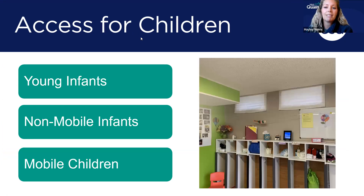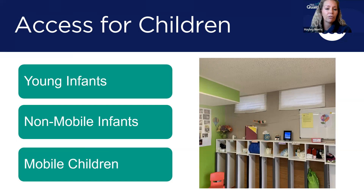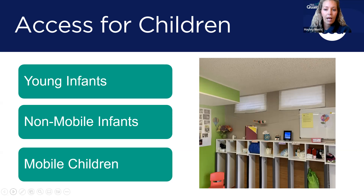Let's look at accessibility among age groups. Young infants who cannot sit unsupported are not required to have constant access to all toys and materials, but some access with provider assistance should be observed — such as providers holding infants in laps and showing them rattles, stuffed toys, or books. For non-mobile infants who can sit unsupported, more materials access is required. Mobile children should move freely throughout the space. If children spend more than an hour outdoors, materials should be accessible outside as well.